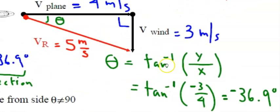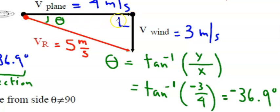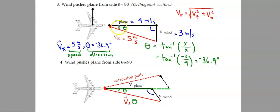The plane will be pointing to the east but moving off on a diagonal at an angle we calculate using the arc tangent of y over x. We have negative three meters per second divided by positive four meters per second; the units cancel and you're left with negative three-fourths, which gives 36.9 degrees offset. This angle is measured off of the horizontal eastward-pointing vector. So the new velocity is five meters per second, offset 36.9 degrees south of east.